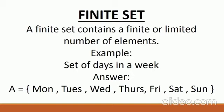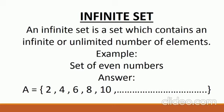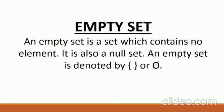Now I am telling you some special types of sets. A Finite Set contains a limited number of elements — for example, the set of days in a week; you can count there are seven days. An Infinite Set is a set which contains an unlimited number of objects, like 2, 4, 6, 8, 10... onwards — you cannot count all the even numbers. An Empty Set is a set that contains no elements; it is also called a null set.